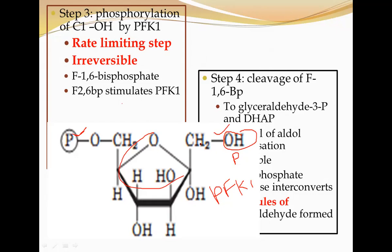Here is a question for you to answer in the comment section: what is the difference between a biphosphate and a diphosphate? In both biphosphate and diphosphate there are two phosphate groups, but we don't call this fructose-1,6-diphosphate — we call it fructose-1,6-bisphosphate. PFK1 is the rate limiting enzyme, so it has many allosteric modulators that control the speed of glycolysis. One such regulator is fructose-2,6-bisphosphate, which has a phosphate at the second position rather than the first. How it is formed we will discuss separately.